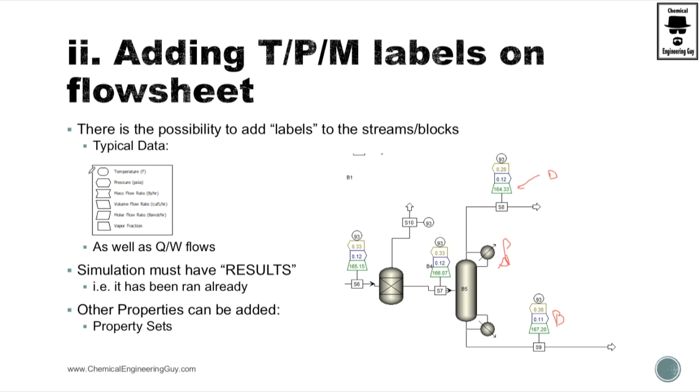Typical data - this is the most common one you will encounter, but it's not limited to this. You can find temperature, pressure, mass flow rate, volumetric flow rate, molar flow rate and vapor fraction.